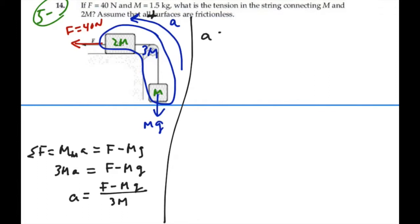Well, let's see. F is 40, M is 1.5, G is 9.8, and then we'll have 3 over 1.5. So let's figure out what this acceleration is. 40 minus 1.5 times 9.8 divided by 4.5 is 5.62 meters per second squared.